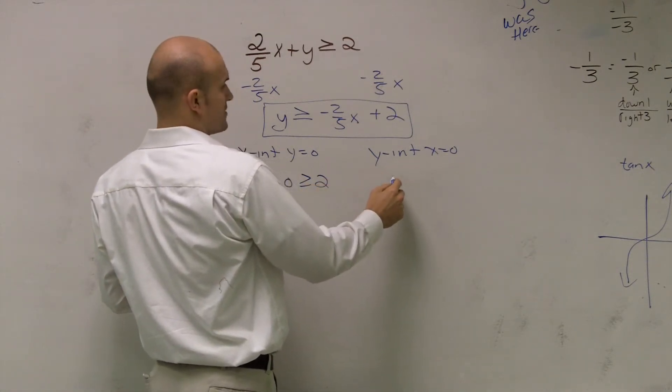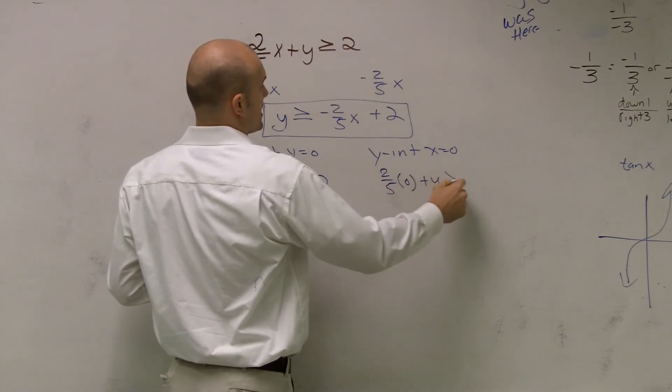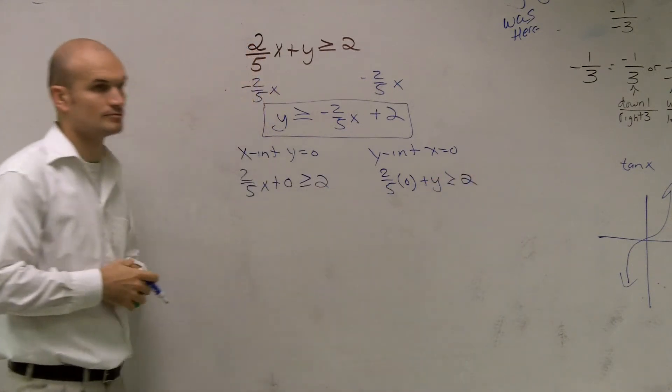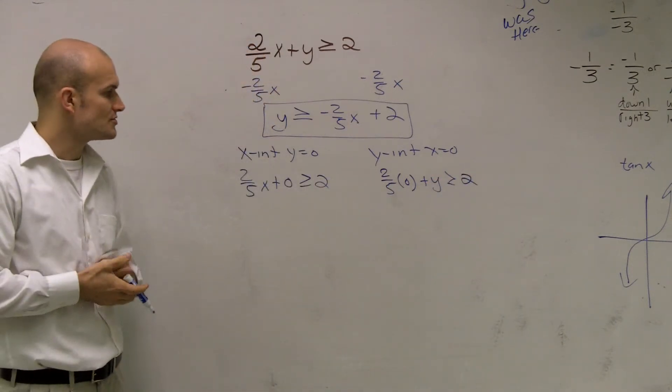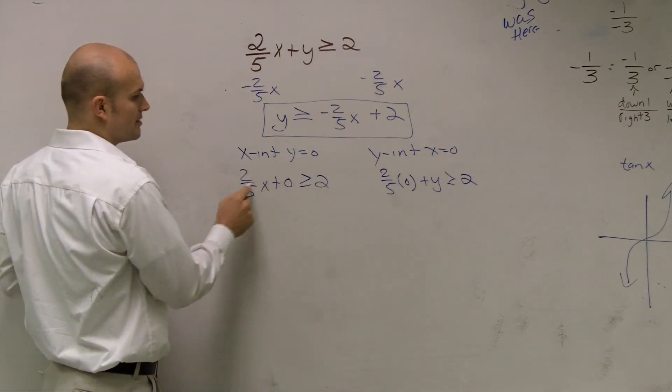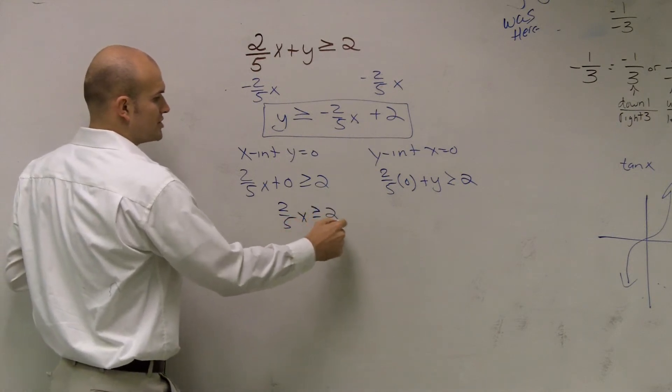So what I'm simply going to do is I'm going to rewrite these equations for my two intercepts. And then this one, I just write in 2 fifths times 0 plus y is greater or equal to 2. So by doing this, I get that 2 fifths x plus 0 is just going to be 2 fifths x is greater or equal to 2.